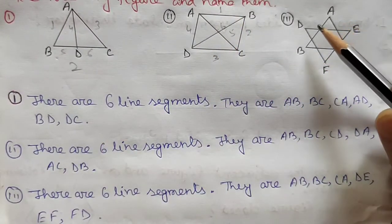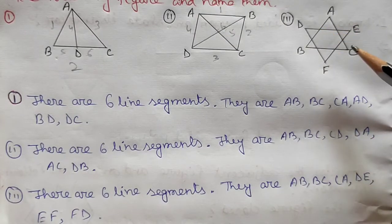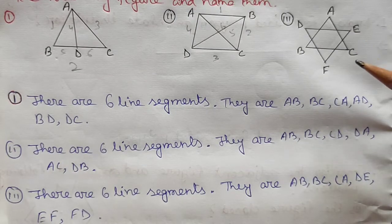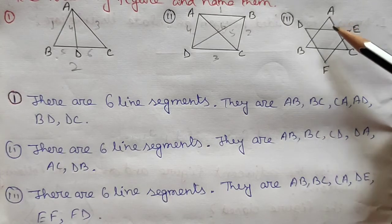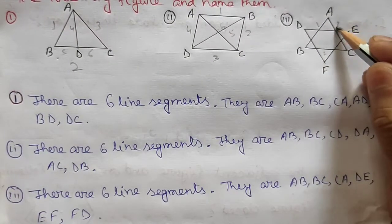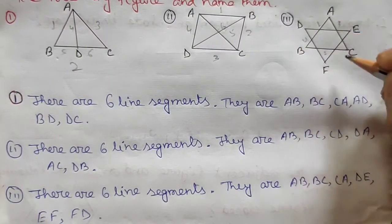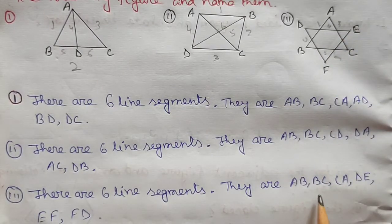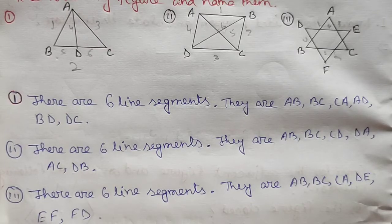For the third figure with two triangles ABC and DEF: each triangle has three sides, and with two triangles that gives six sides. Counting: AB one, BC two, three, four, five, six — there are also six line segments: AB, BC, CA, DE, EF, and FD.